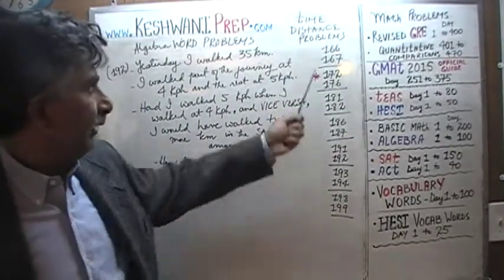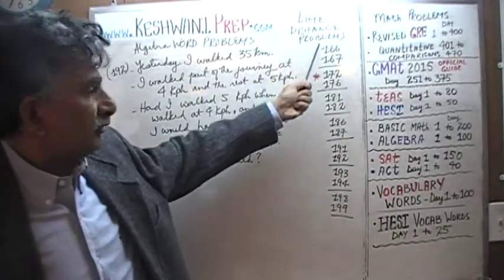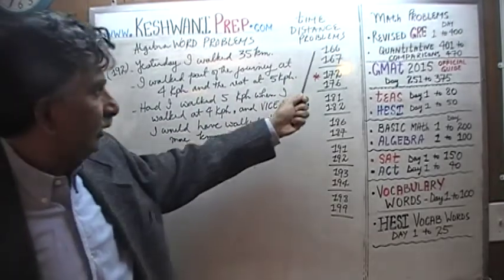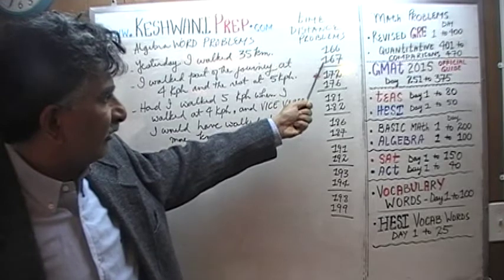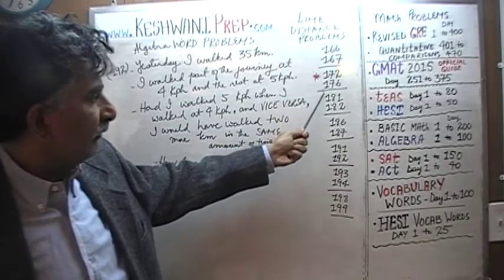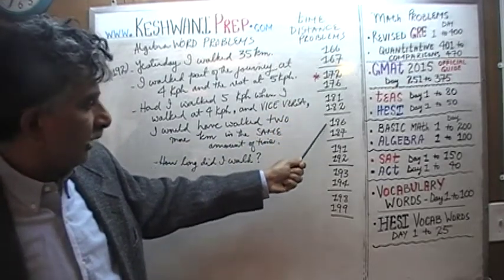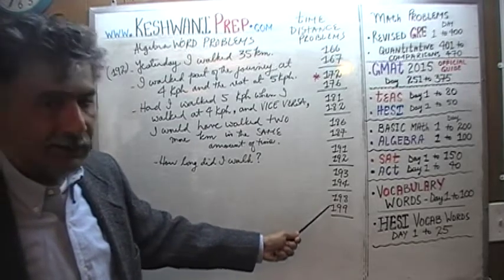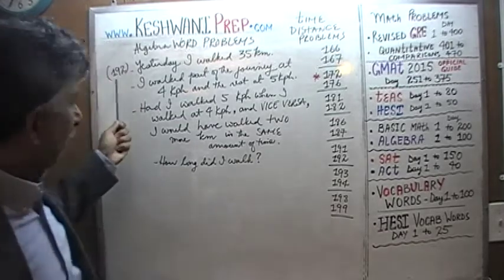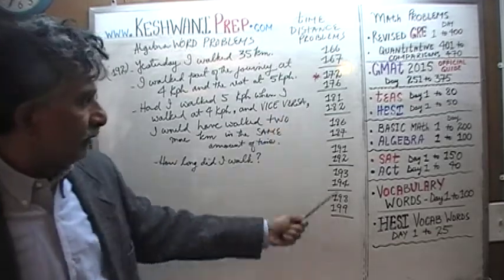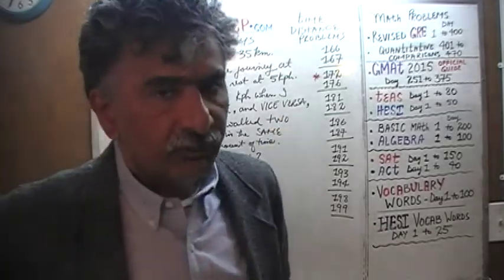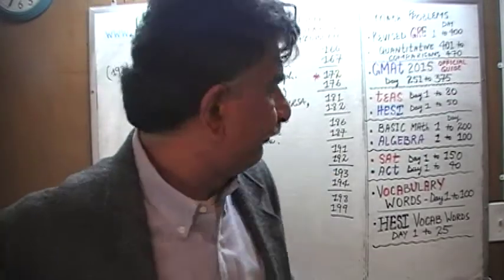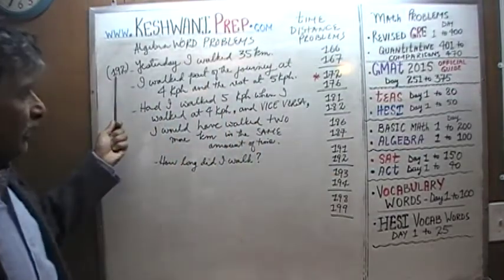These are problems we've done in the past dealing with the concept of time and distance, which is exactly what this is. The related problems include 166, 167, 172, 176, 181, 182, 186, 187, 191, 192, 193, 194, 198, and 199. These are problems you'll find in case you're interested in practicing word problems dealing with time and distance.